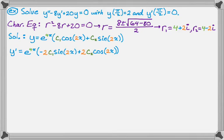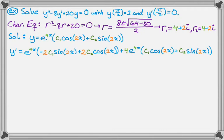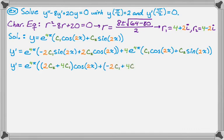Using the product rule — first times the derivative of the second, plus the second times the derivative of the first — derivative of the first is 4e to the 4x. Then this looks like a mess, so I'm going to factor it to clean it up. e to the 4x comes out of both terms. Taking everything with cosine of 2x: it has 2c₂ plus 4c₁ in front. And everything with sine of 2x gives negative 2c₁ plus 4c₂. So y prime equals e to the 4x times [(2c₂ + 4c₁)cos(2x) + (−2c₁ + 4c₂)sin(2x)]. That's as simplified as we'll make it.